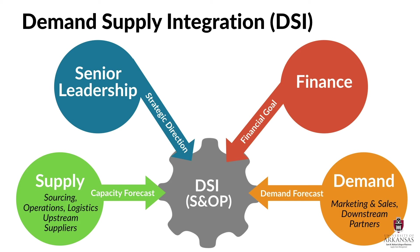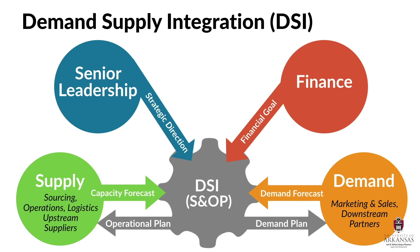The S&OP process will produce a demand plan that gives clear direction to marketing and sales. This plan may require additional efforts to grow demand — things like promotions, advertising, or price reductions. Or there may be focused actions to reduce demand, such as price increases or reduced incentives. An operational plan is also produced through the S&OP process. That plan clearly tells sourcing how much to buy, it tells operations how much to produce, and it tells logistics how much to move.